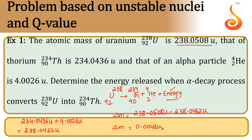Let us convert this disappeared mass into energy. Since 1 atomic mass unit equals 931 MeV, for 0.0046 atomic mass units, the energy released is 0.0046 × 931 = 4.3 mega electron volts. So the amount of energy released during the nuclear decay from uranium to thorium is 4.3 MeV.